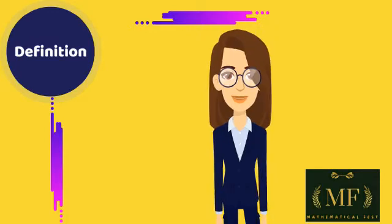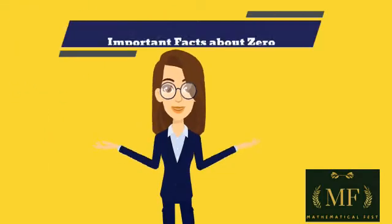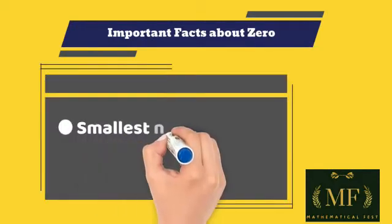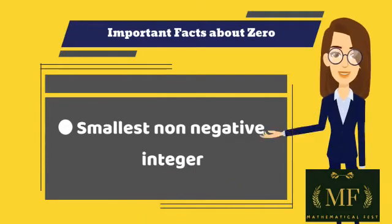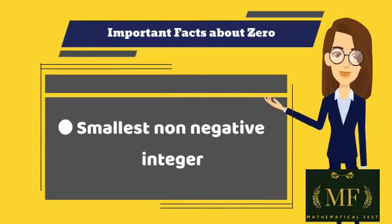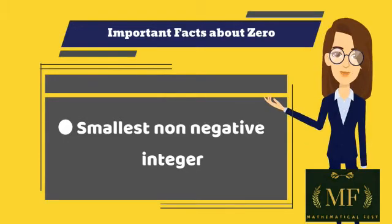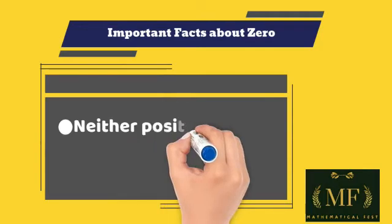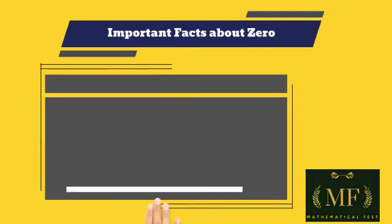As a digit, zero is used as a placeholder in a place value system. The number zero is the smallest non-negative integer. Zero may or may not be considered a natural number, but it is an integer and hence a rational number, and in fact a real number as well as an algebraic and a complex number. Zero is neither positive nor negative.